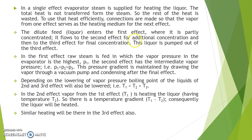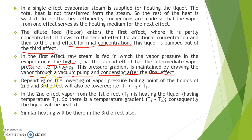The dilute feed enters the first effect where it is partly concentrated, flows to the second effect for additional concentration, and then to the third effect for final concentration. This liquor is pumped out of the third effect. In the first effect, raw steam is fed in, where the vapor pressure in the evaporator is the highest. The pressure gradient is maintained by drawing the vapor through a vacuum pump and condensing after the final effect. Depending upon the lowering of vapor pressure, the boiling point of liquids in the second and third effects will also be lowered.